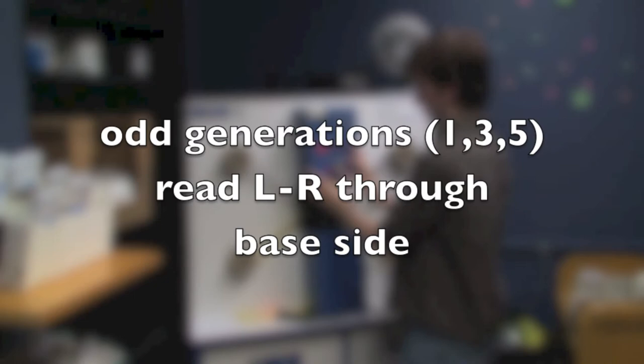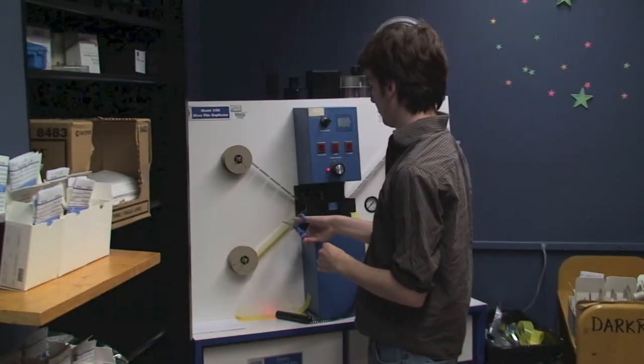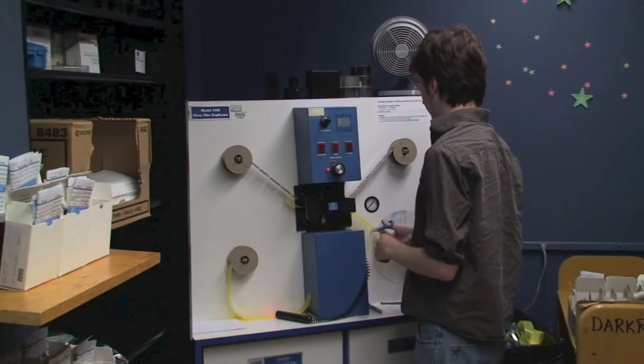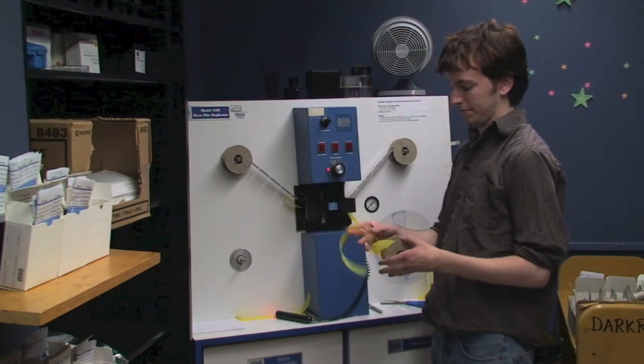Odd generation films like 1, 3, and 5 can be read left to right through the base side of the film, while even generations 2, 4, and 6 have right reading through the emulsion side. And since anything above a third generation is rare, a first generation camera master or second and third generation print master or service copy are the most likely choices.